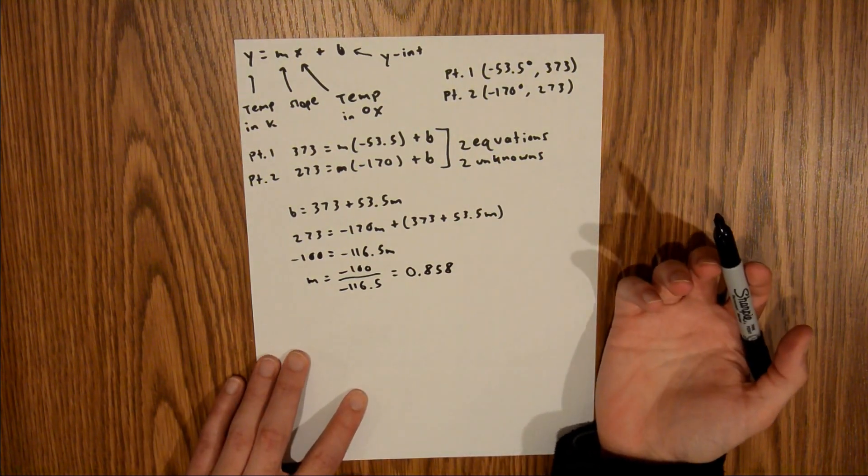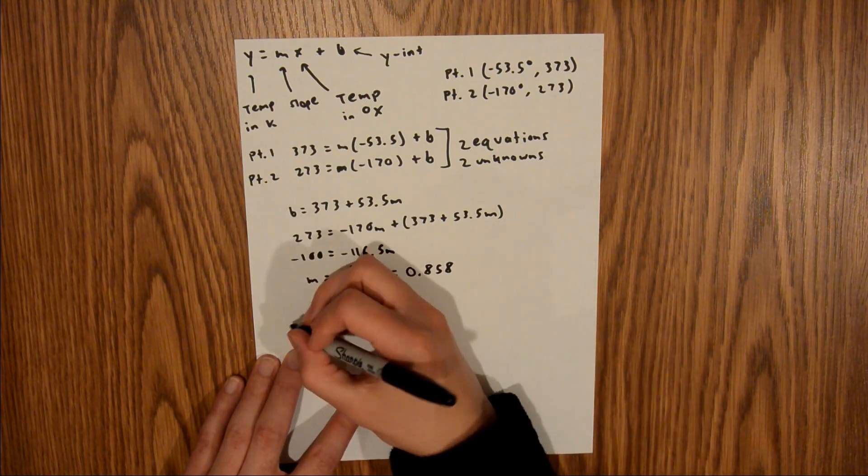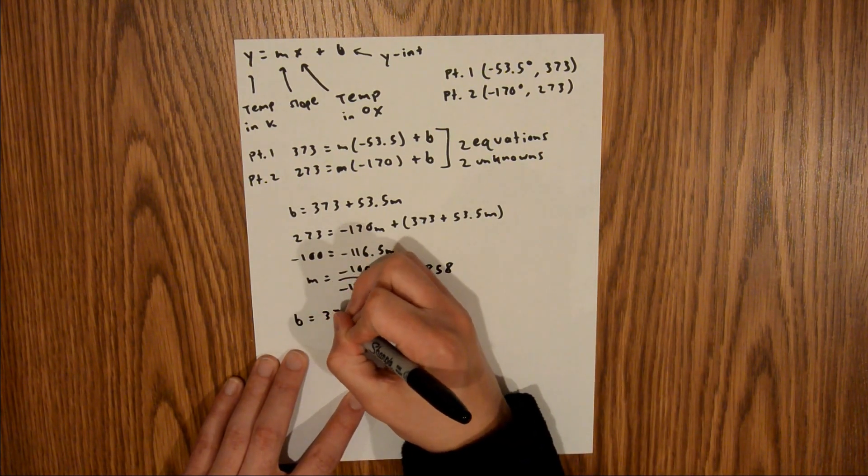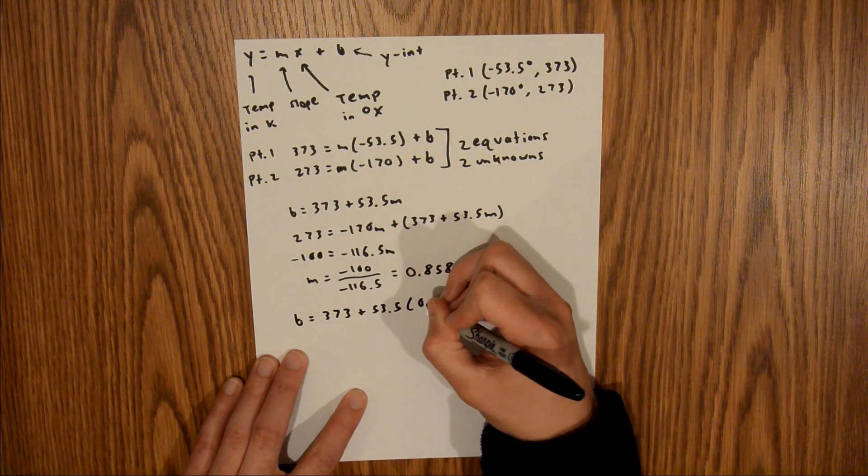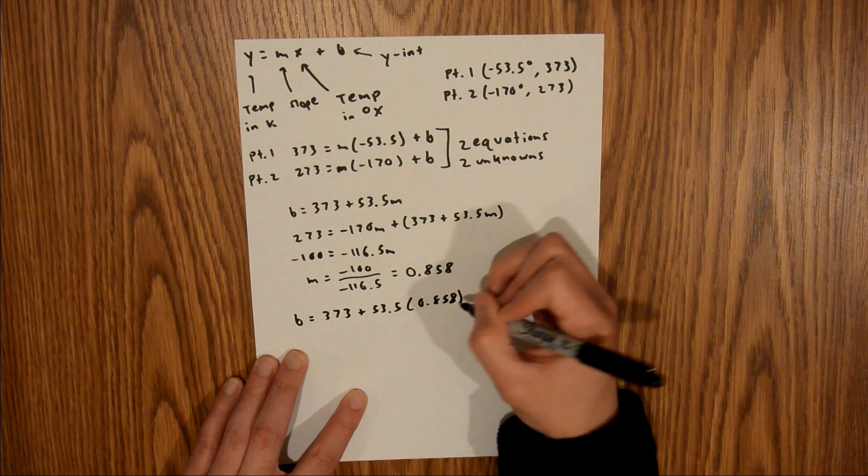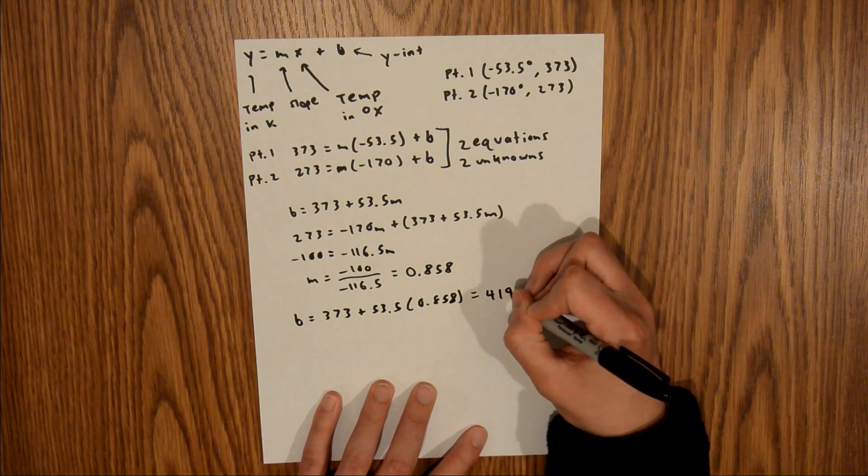So now that's my value of m, and what I can do is plug that value of m into this equation right here to solve for b. If you plug that into your calculator, this should equal about 419.